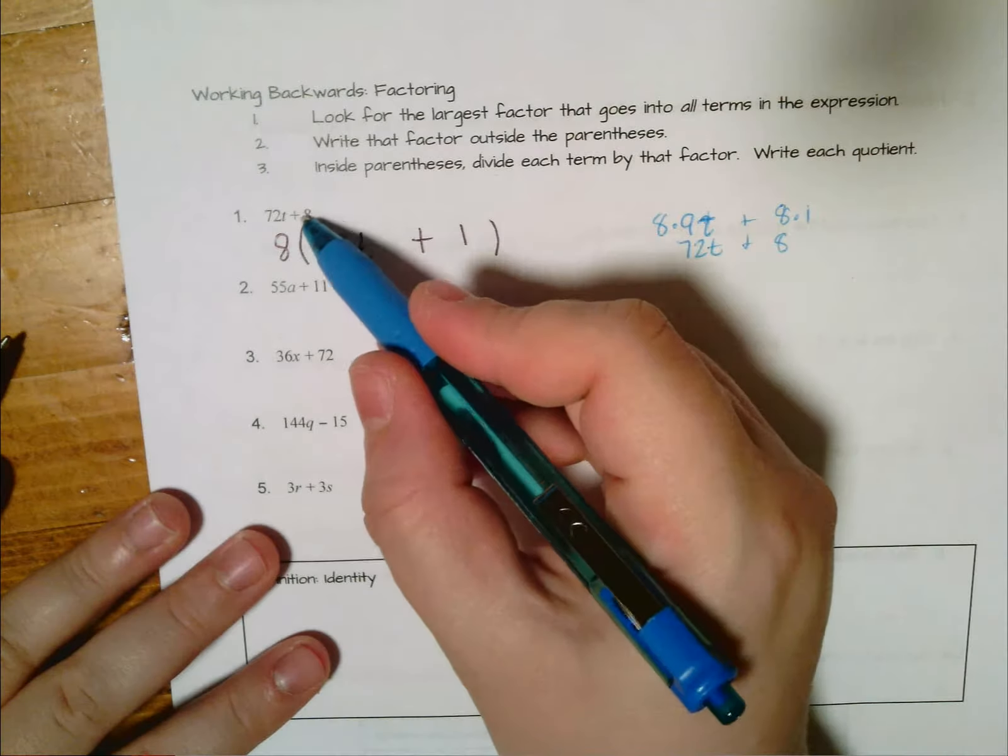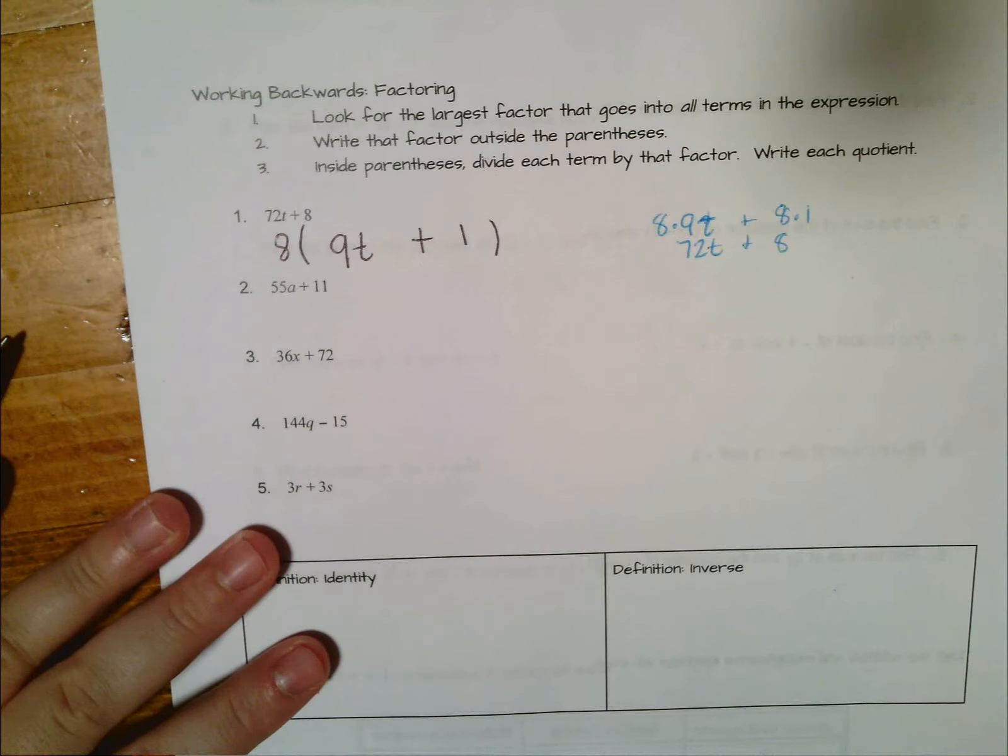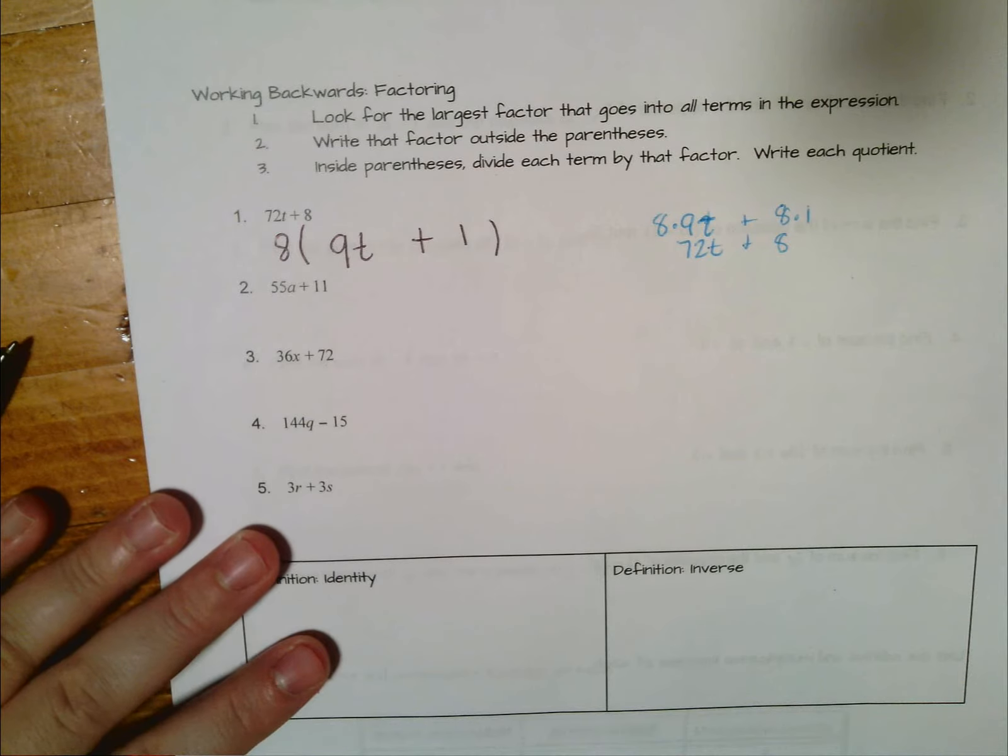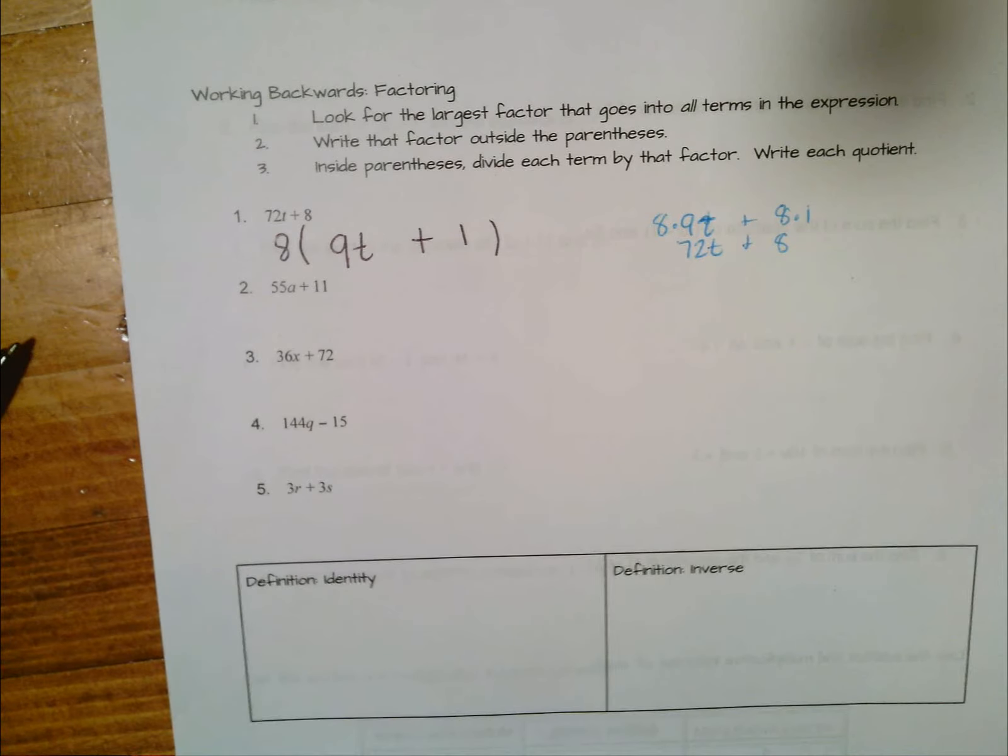And I'm working backwards to put them into a form with parentheses. So in summary, step one: look for the largest factor that goes into all terms in the expression. Step two: write that factor outside the parentheses. And then step three: inside the parentheses divide each term by the factor and write the quotient.